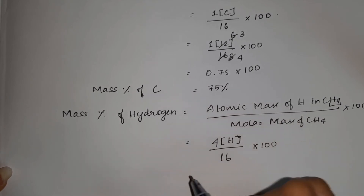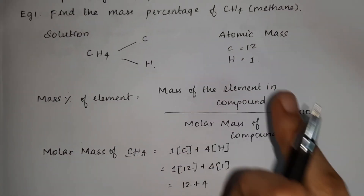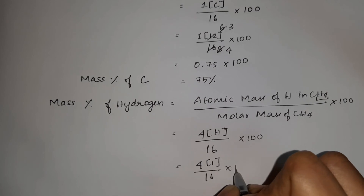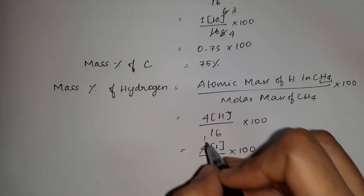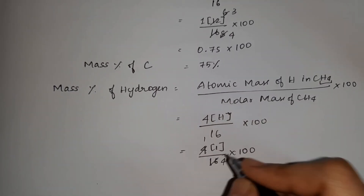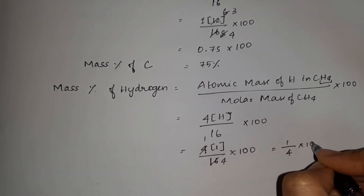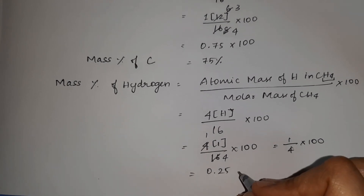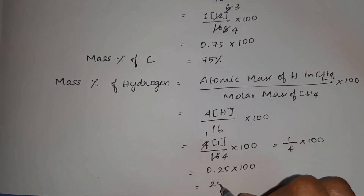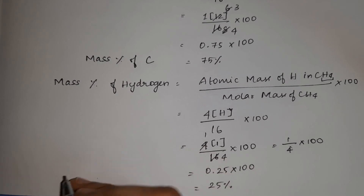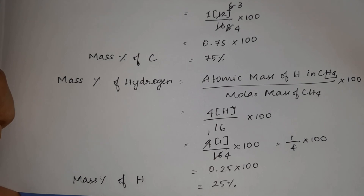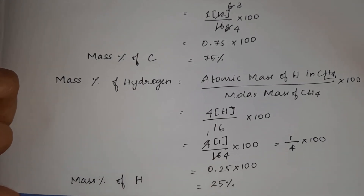Now H is there. Hydrogen atomic mass is 1, so substitute 1. So 4 into 1 divided by 16 into 100. Cancel: 4 divided by 16 is 1 by 4, which equals 0.25. Multiplied by 100 gives 25 percentage. So mass percentage of hydrogen is 25%.